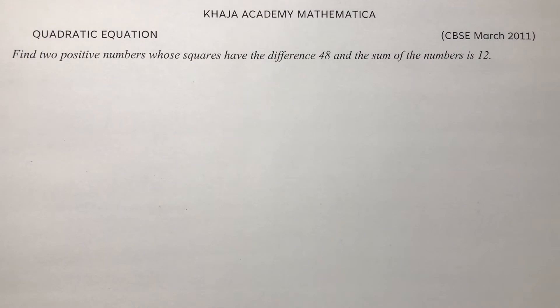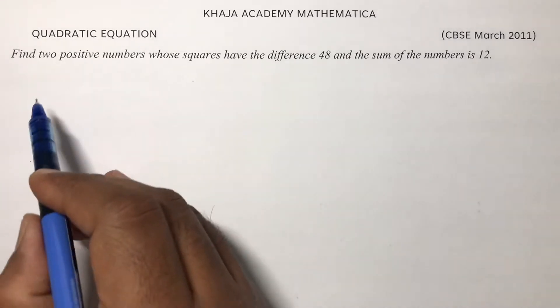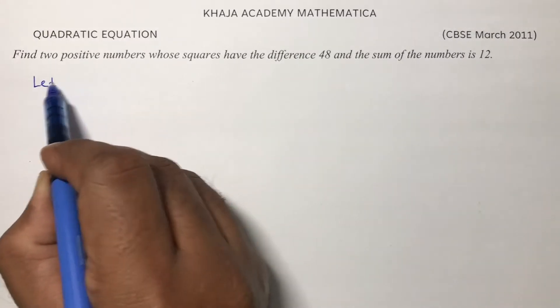Find two positive numbers whose squares have the difference 48 and sum of the numbers is 12. So here let the two positive numbers be...